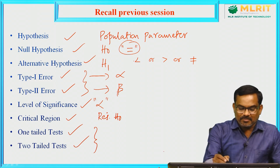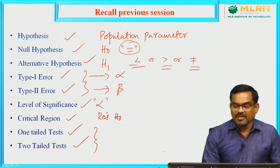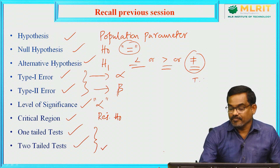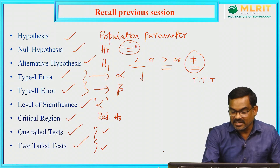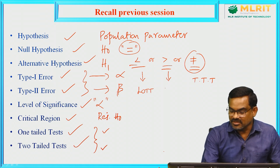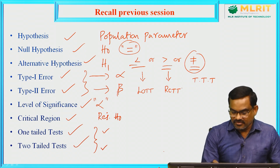Based on the alternative hypothesis, if the alternative hypothesis is of 'not equal to' type, the test is called a two-tailed test. If the alternative hypothesis is either less than or greater than, the test is called a one-tailed test. If it is less than type, it is known as a left one-tailed test; if it is greater than type, it is called a right one-tailed test. These are the definitions discussed in the last session.